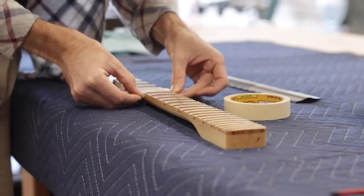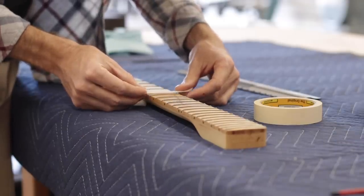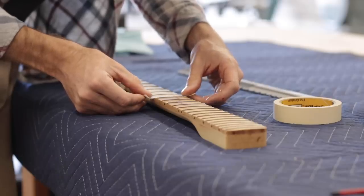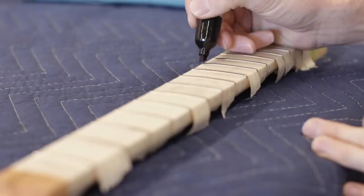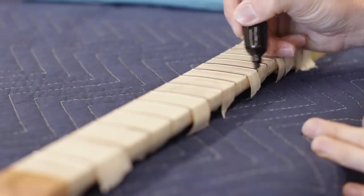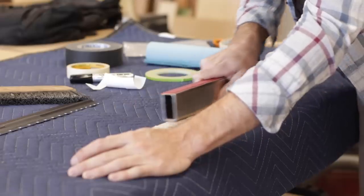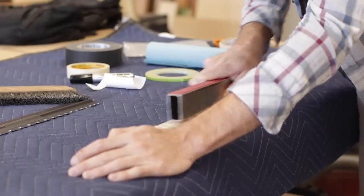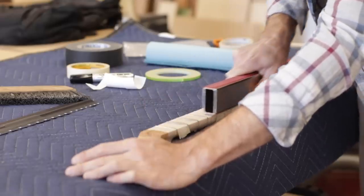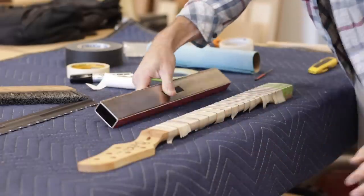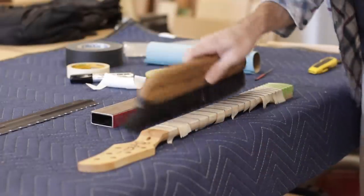Next, I masked off the areas in between the frets to protect the fretboard, then marked the top edge of each fret to help indicate where the high and low spots are while leveling. Then it's just a matter of using a perfectly flat surface to sand or file the frets, and in my case I'm using a leveling beam.